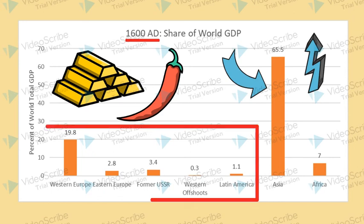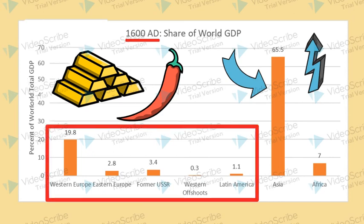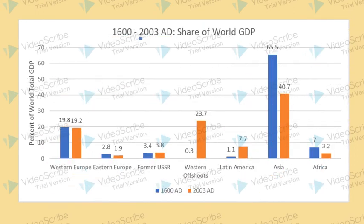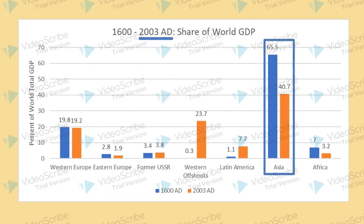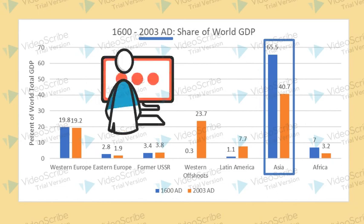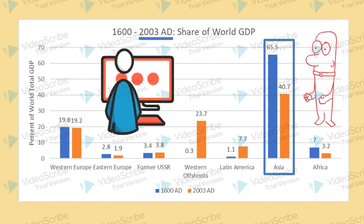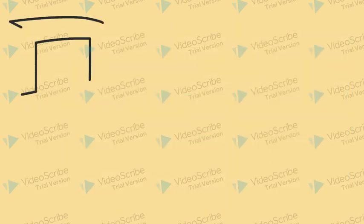In turn, we can see that the Western world didn't have such a stronghold. Though fast forward to 2003, and Asia's share had drastically been reduced and the Western world had levelled out, mainly due to technological advancements in the US and Europe, though also because many nations were still recovering from colonisation decades previous.